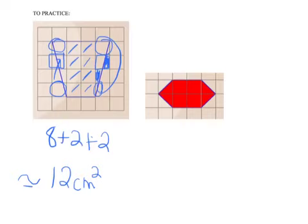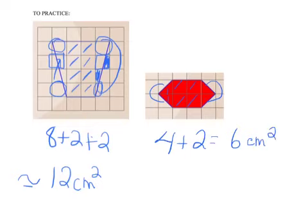Let's try this next shape. Count my whole units first or my whole squares. One, two, three, four. I have one half and one half here, two halves make a whole. And I have one half here and one half here, two halves make a whole. So plus two. Four plus two is six. The estimated area of this shape is six centimeters squared.